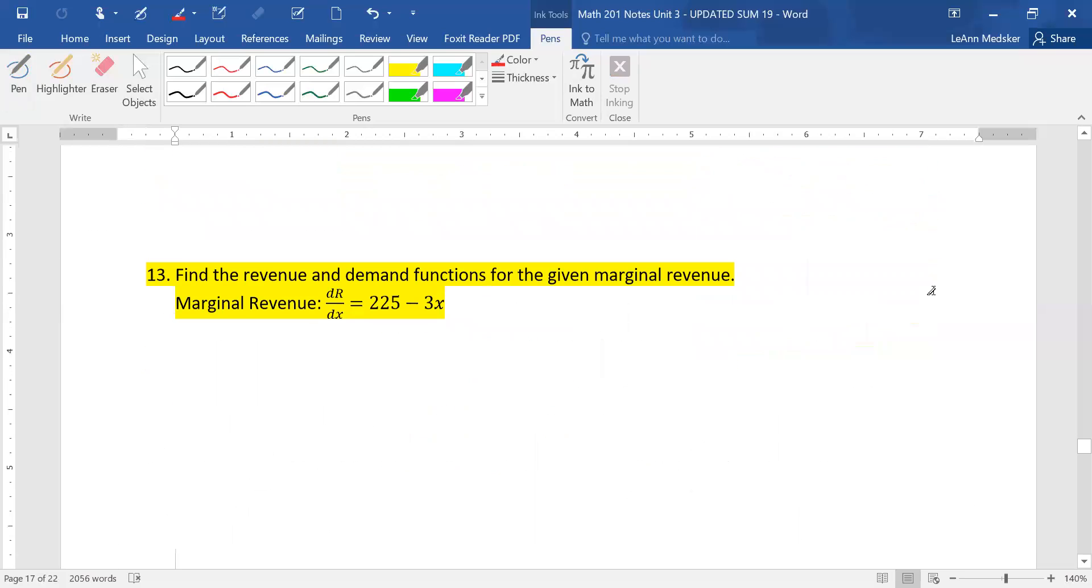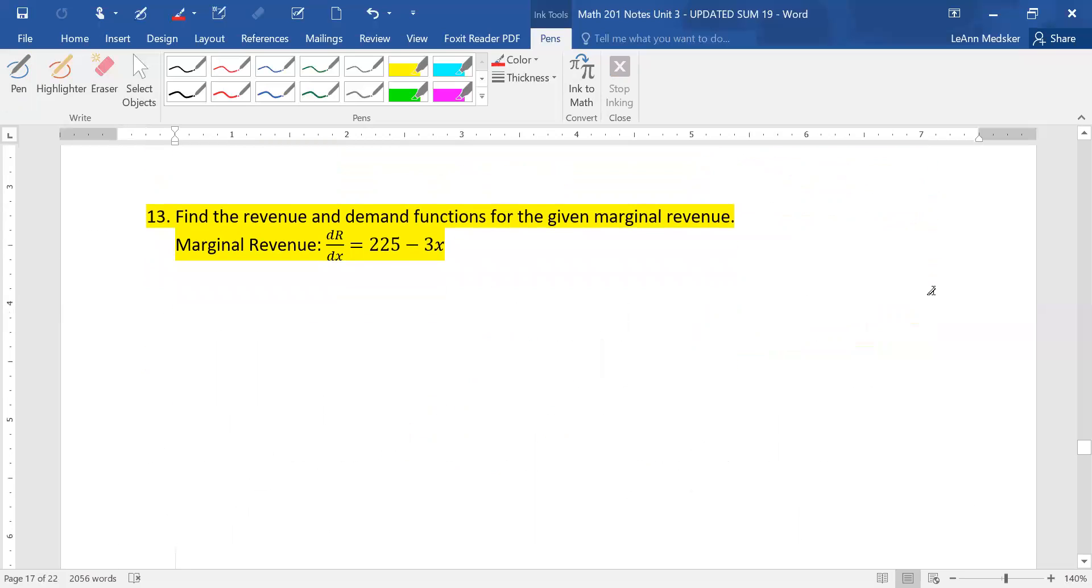All right. And then we had this number 13. It says, find the revenue and demand function for the given marginal. So remember, a marginal is like a derivative. So this is like an r prime. So we're doing that r of x is equal to the antiderivative or integral of r prime of x dx.